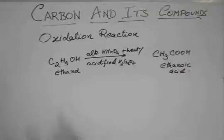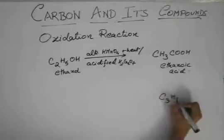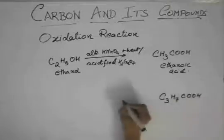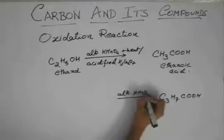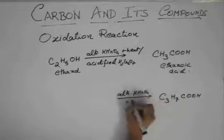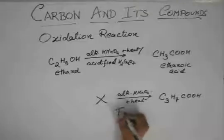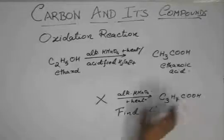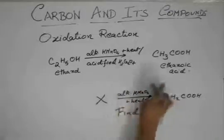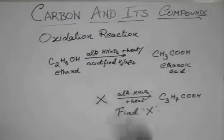Now questions will come like, you will be given, suppose, C3H7COOH, and there will be an arrow, and there will be alkaline KMnO4 plus heat. So first of all, you examine the thing on the top of the arrow. That is, alkaline KMnO4 plus heat.